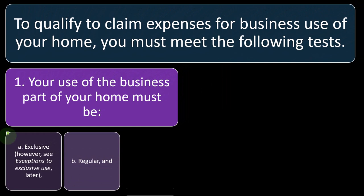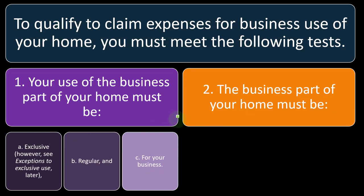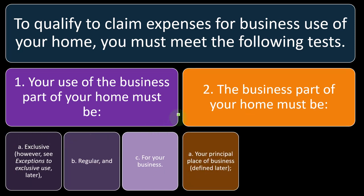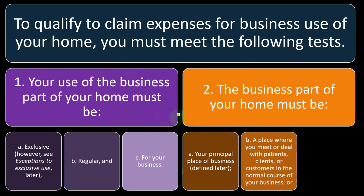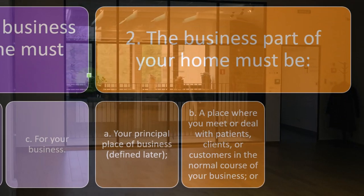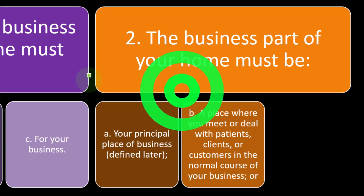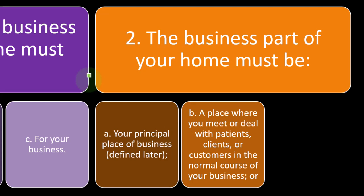Test number two: the business part of your home must be A) your principal place of business, B) a place where you meet or deal with patients, clients, or customers in the normal course of business, or C) a separate structure not attached to your home used in connection with your business. For principal place of business, you're thinking about where you do your executive work or meet patients — as opposed to a secondary office where you just check emails occasionally.